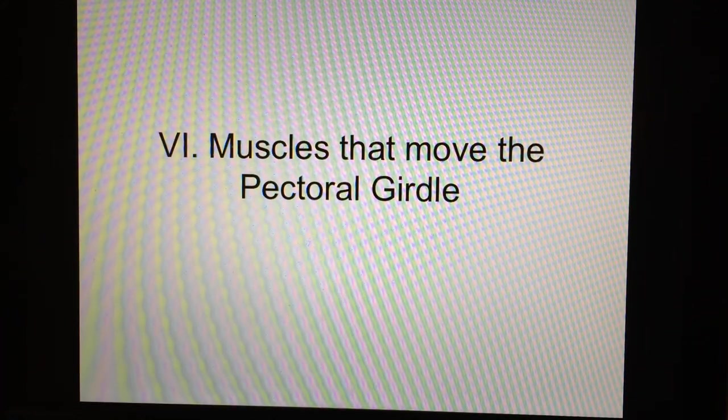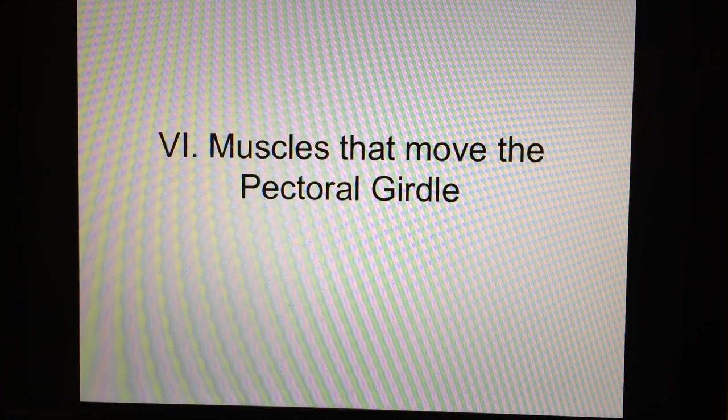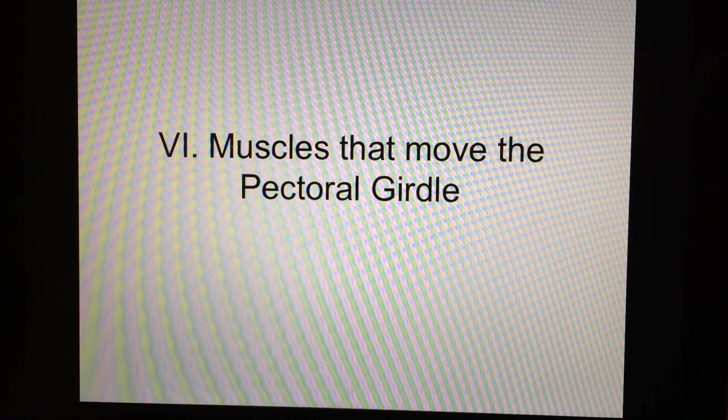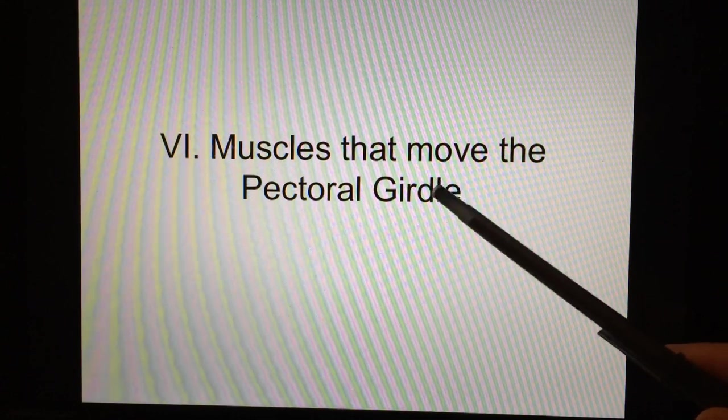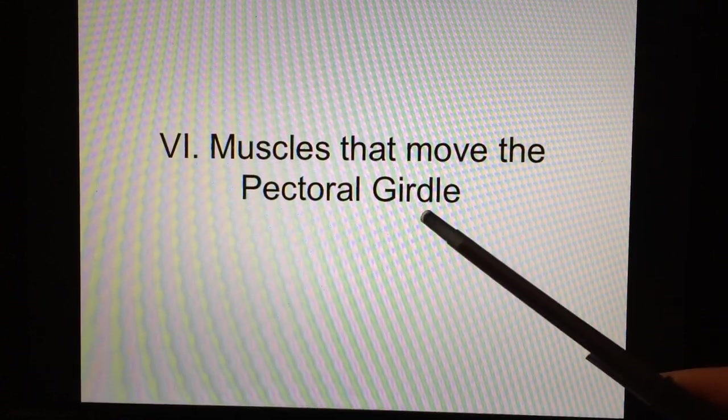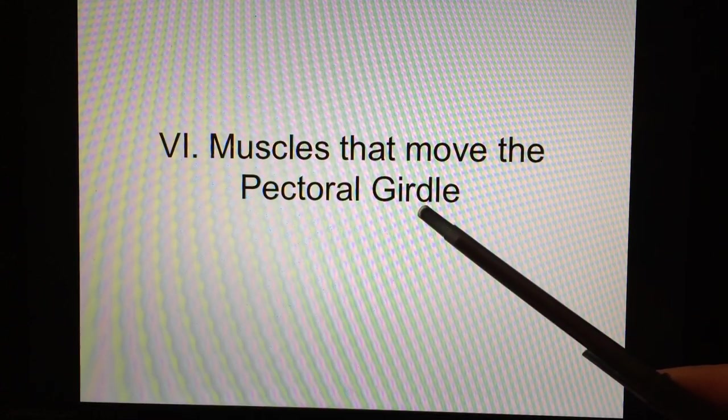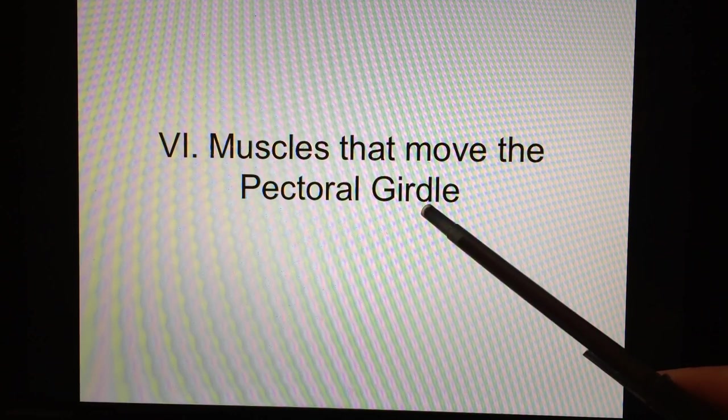All right, let's continue this afternoon with our review of skeletal muscles, and we're going to move on to Roman numeral 6, muscles that move the pectoral girdle. But before we can do that, we have to examine a couple of words here. In anatomy, a girdle is any bone or bones that attach an appendage to the midline.